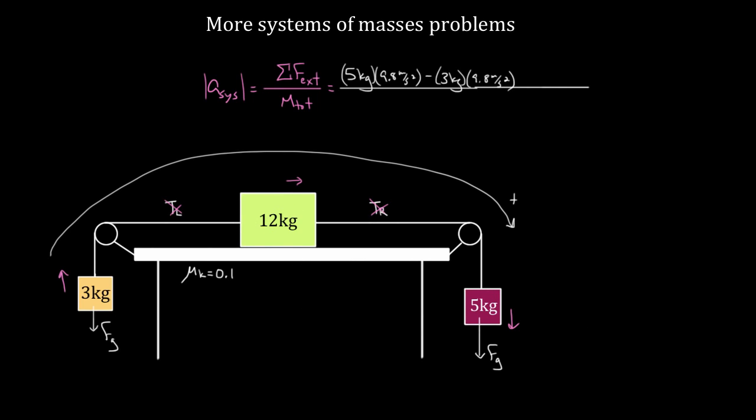So are there any forces associated with the 12 kilogram box that try to prevent motion? It turns out there is. There's going to be a force of friction between the table, because there's this coefficient of kinetic friction. So I've got a force this way, this kinetic frictional force that's gonna be, have a size of mu K times FN, that's how you find the normal force. And so this is gonna be minus, the mu K is 0.1. And the normal force will be the normal force for this 12 kilogram mass, so I'll use 12 kilograms times 9.8 meters per second squared.